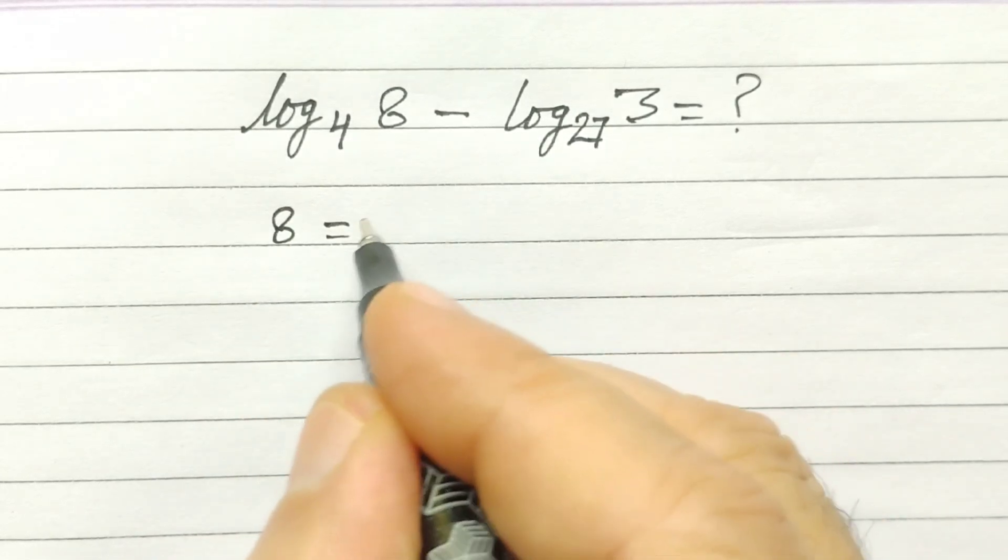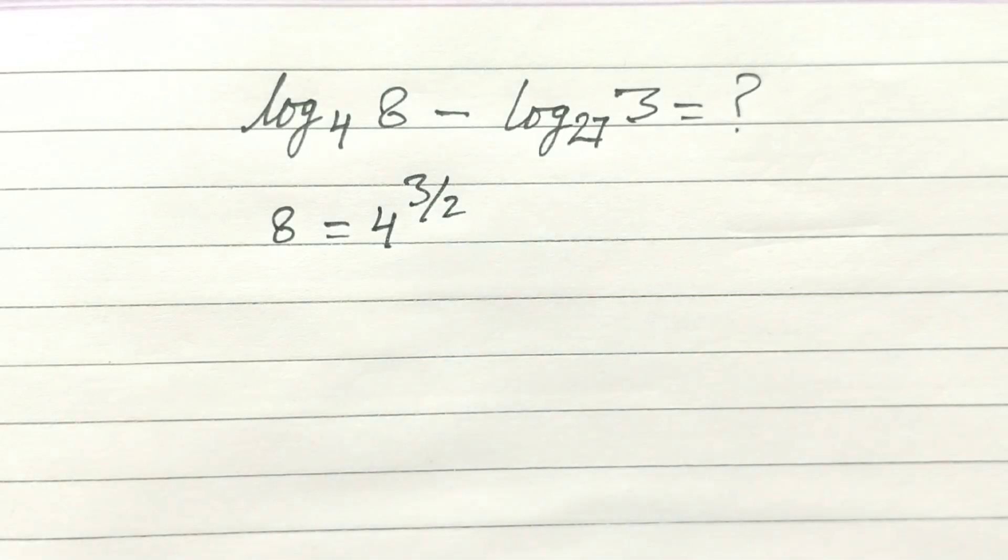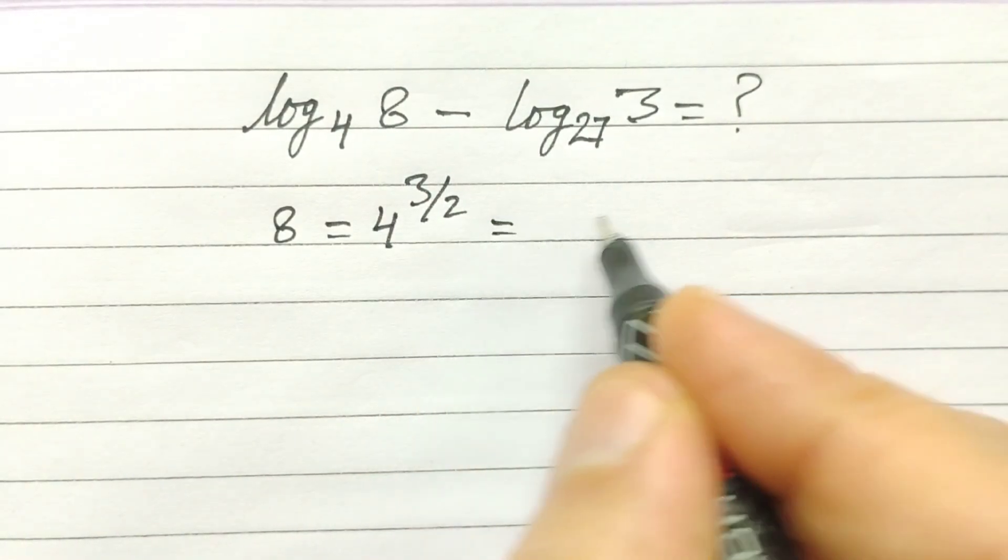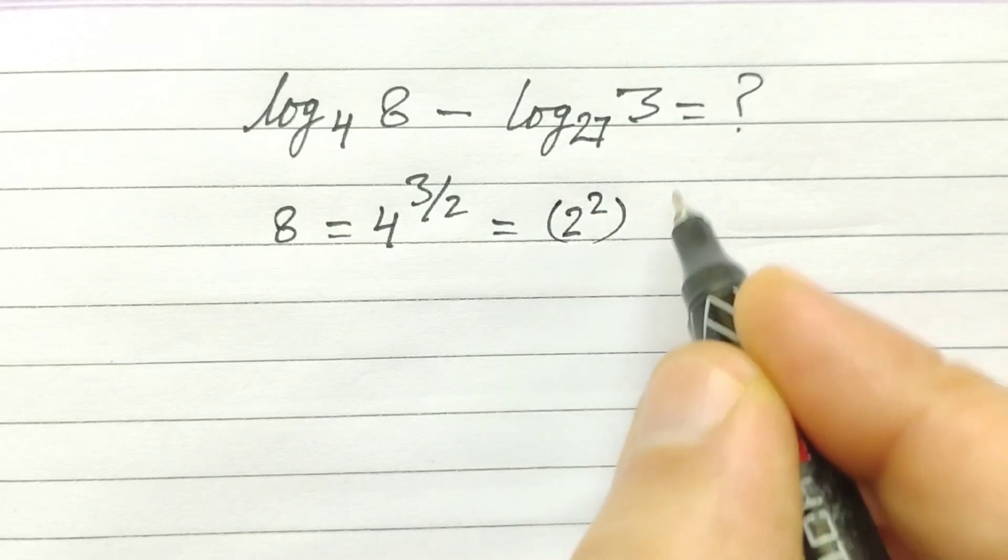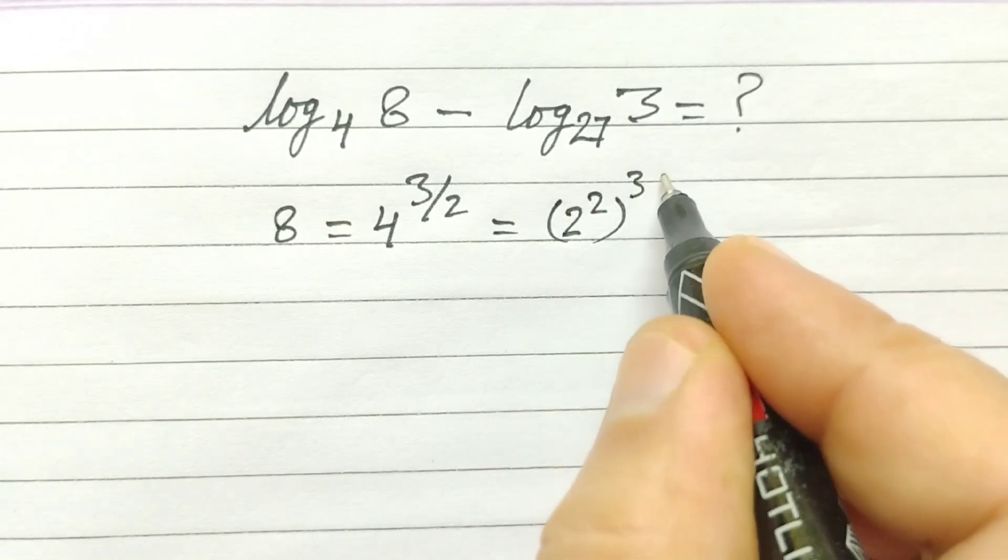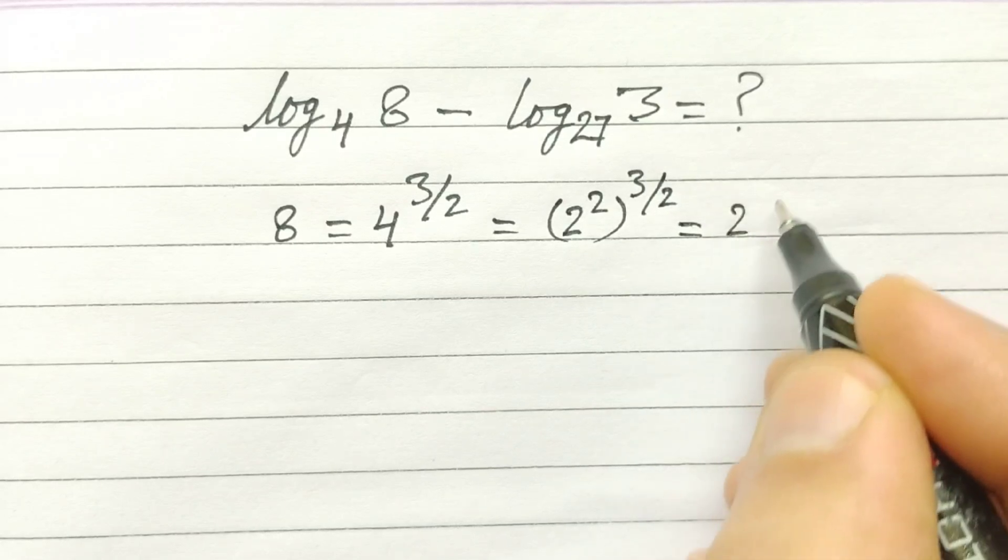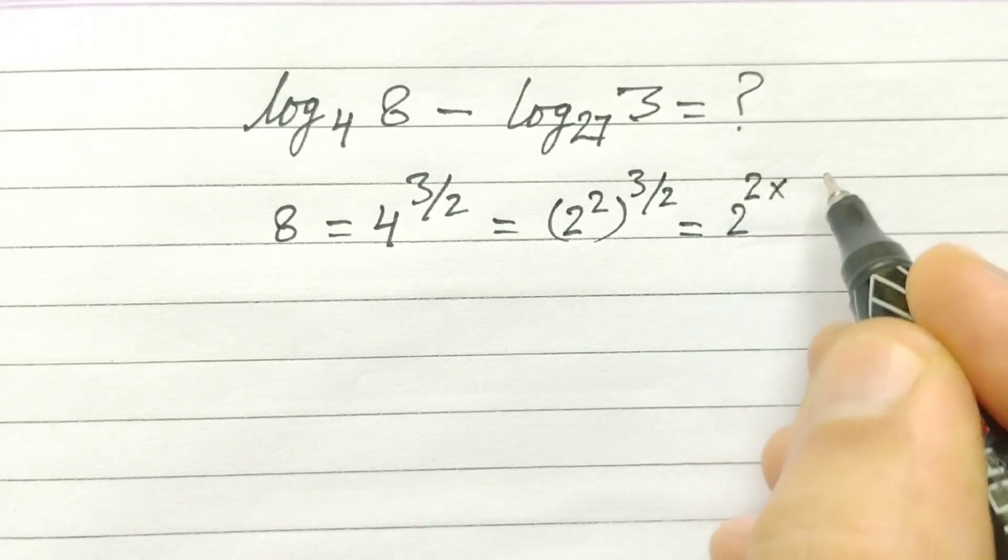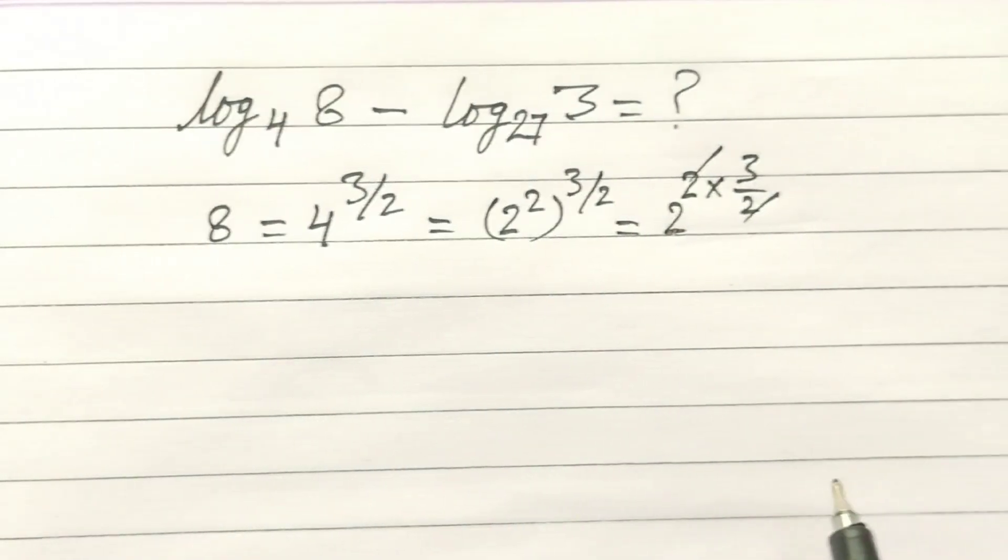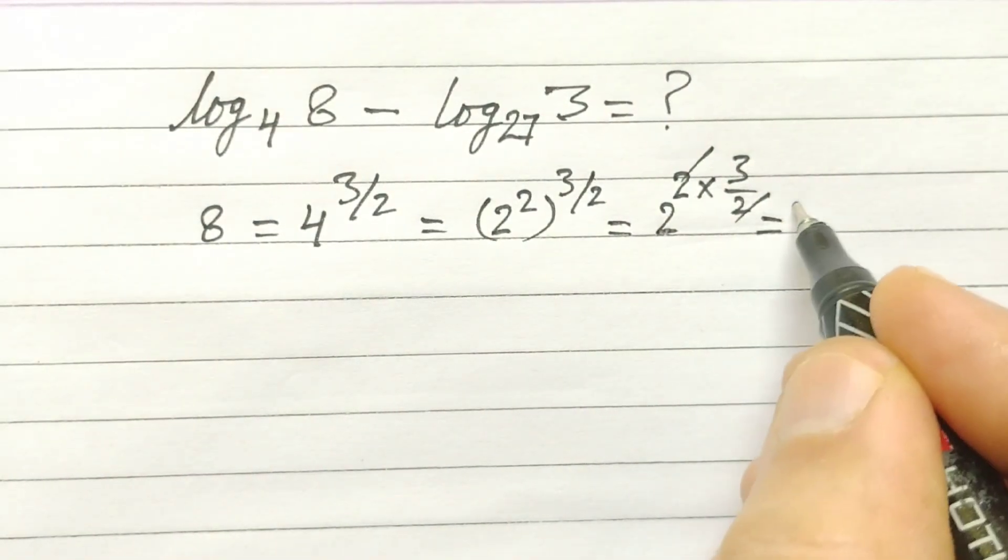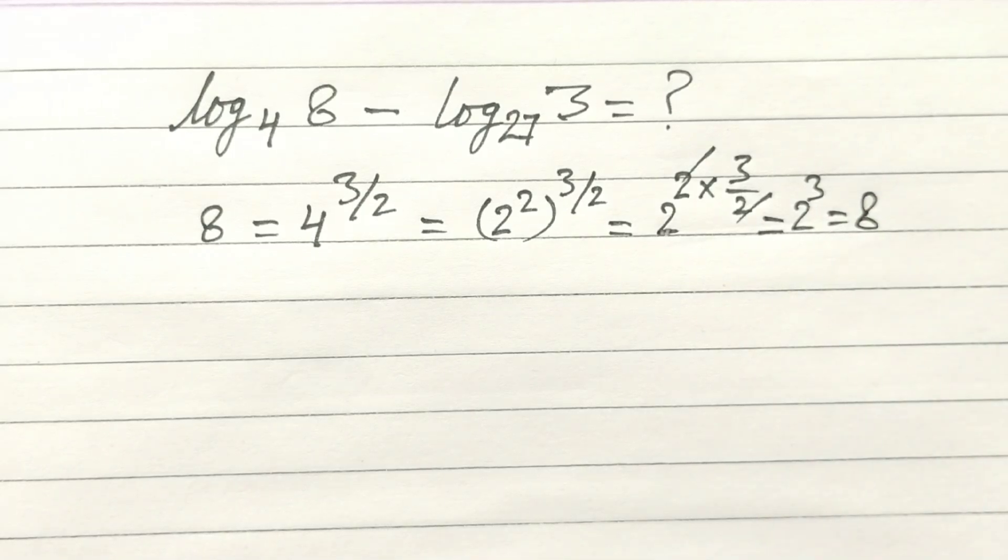as 4 to the power 3/2, because 4 is 2 squared to the power 3/2. So 2 squared times 3/2, this will be 2 cubed, which equals 8.